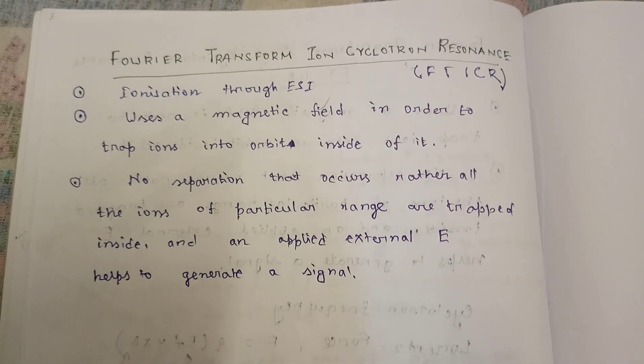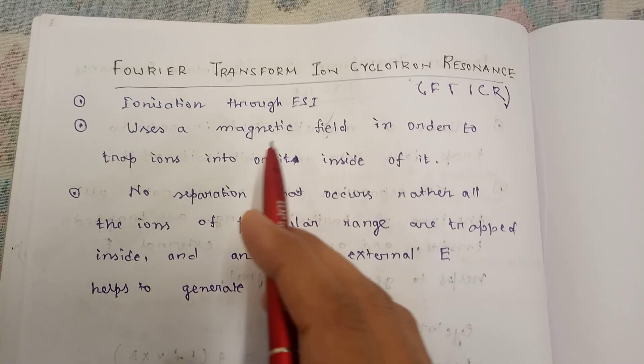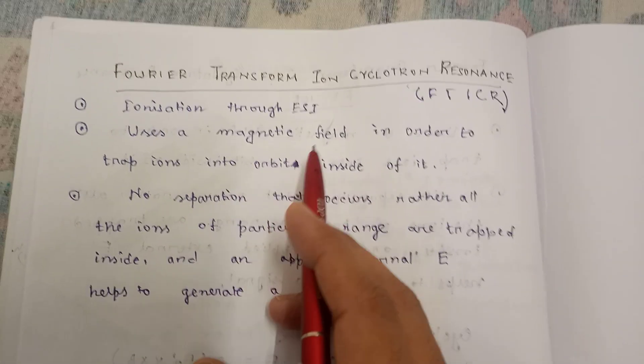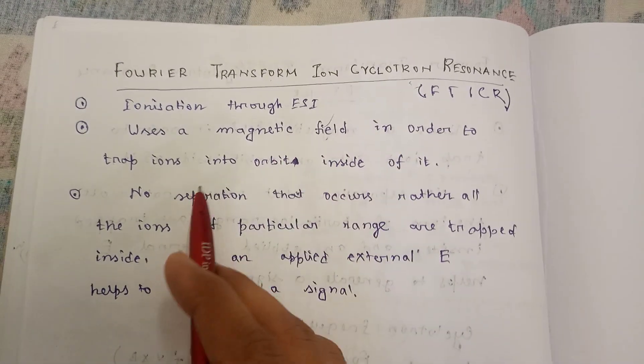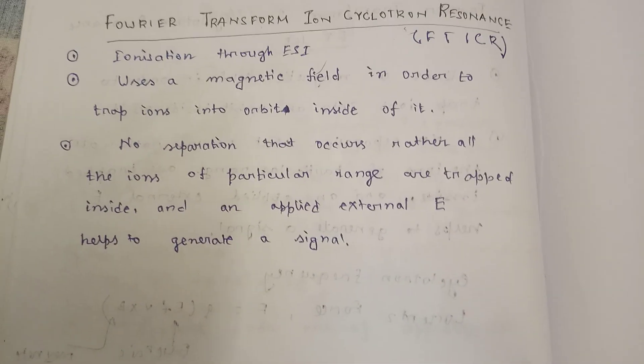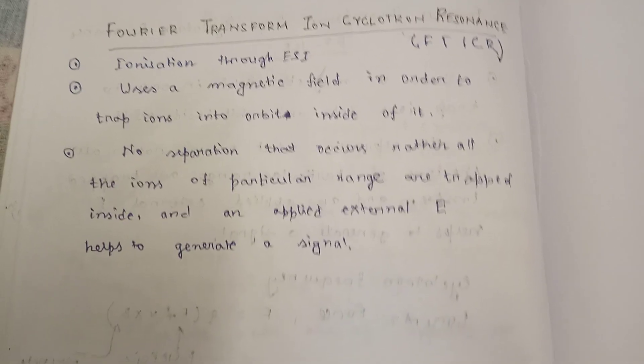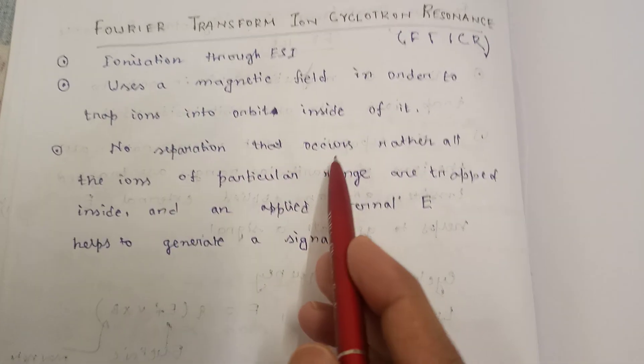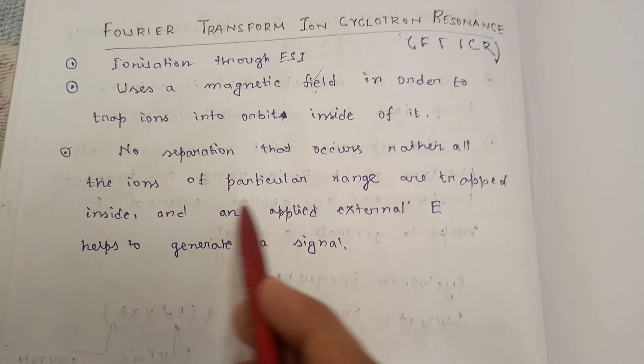After ionization, what happens? The magnetic field is used to trap ions into orbit inside of it. No separation occurs; rather, all the ions of a particular range are trapped inside.